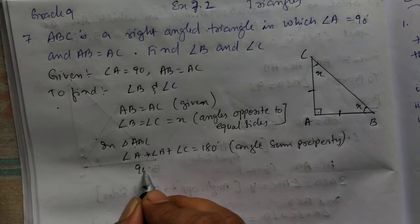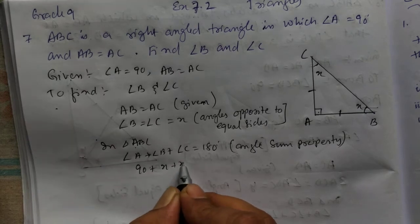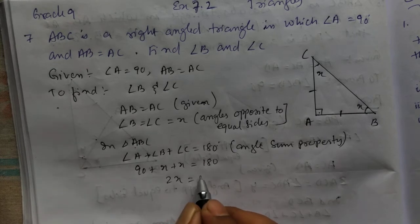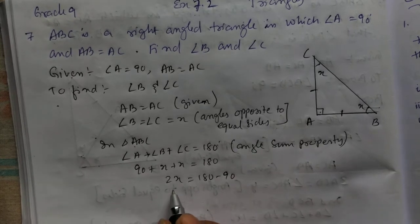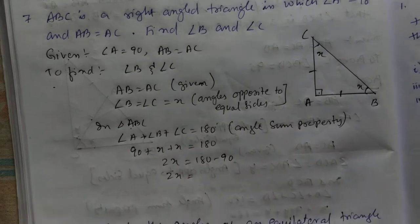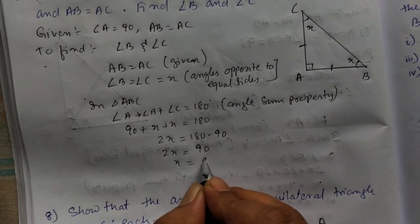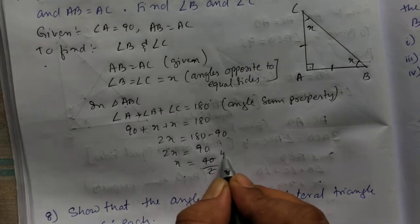So angle A is 90 plus X plus X equal to 180. 2X equal to 180 minus 90. 2X equal to 90. So X will be 90 by 2, 45 degree.